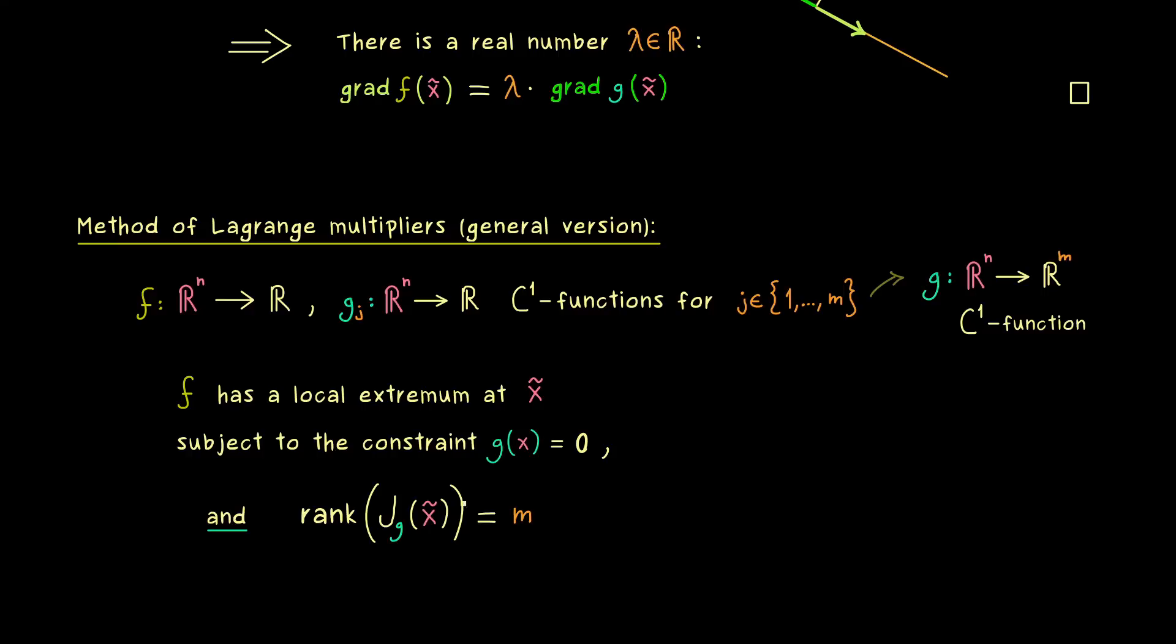And there we always consider a partial Jacobian inside, which should be invertible. This is exactly what the implicit function theorem needs as an input. And with that we get the same thing out as before. Namely that the gradient of f at the point x̃ lies in this m-dimensional subspace spanned by the gradients of gⱼ.